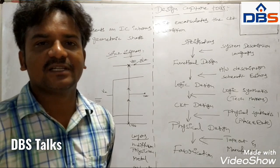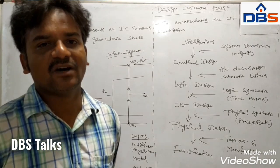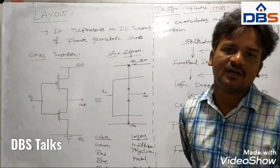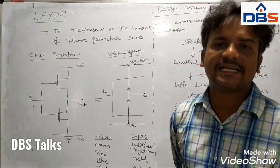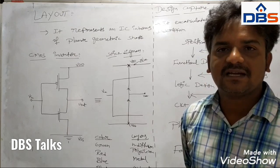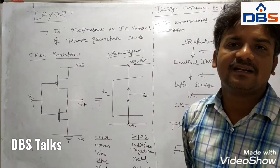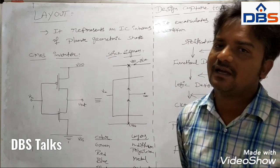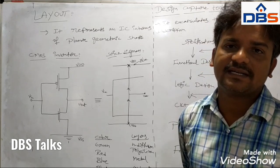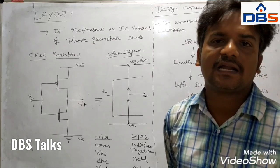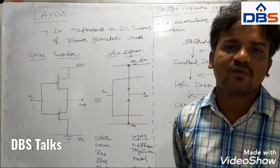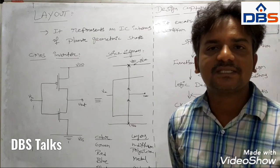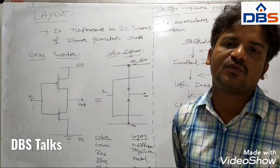Already in the previous units, we designed different layouts for different logic functionalities. So whatever the Boolean expression, from that Boolean expression we have to design a circuit level design. After that circuit level design, we have to draw a stick diagram for a particular circuit design by using different color code rules. After that, we have to write that layout.